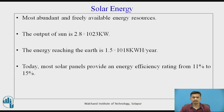Solar energy is the most abundant and freely available energy resource on the earth. The output of the sun is 2.8 × 10²³ kW, whereas the energy reaching the surface of the earth is 1.5 × 10¹⁸ kW per year. The efficiency of solar panels is low — today most solar panels provide an energy efficiency rating from 11% to 15%, meaning they convert solar energy into electrical energy with 11 to 15% efficiency.